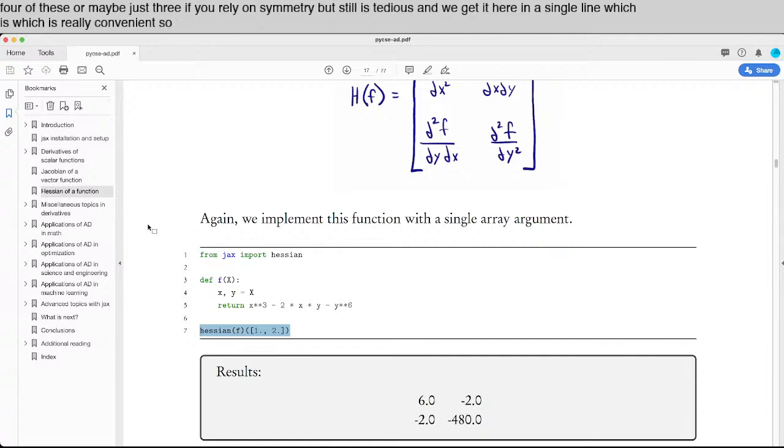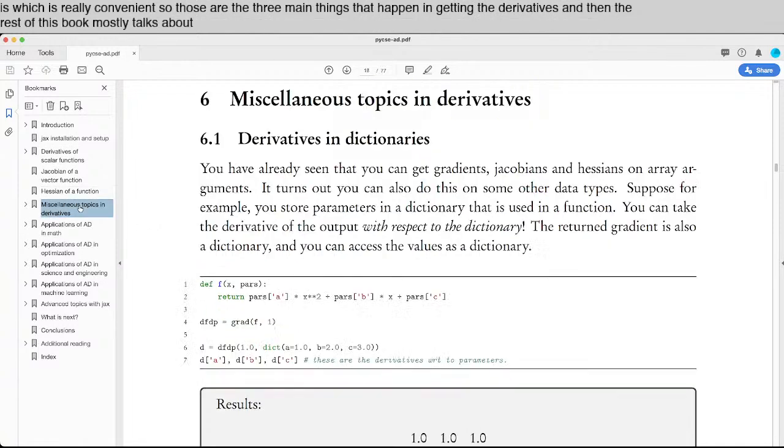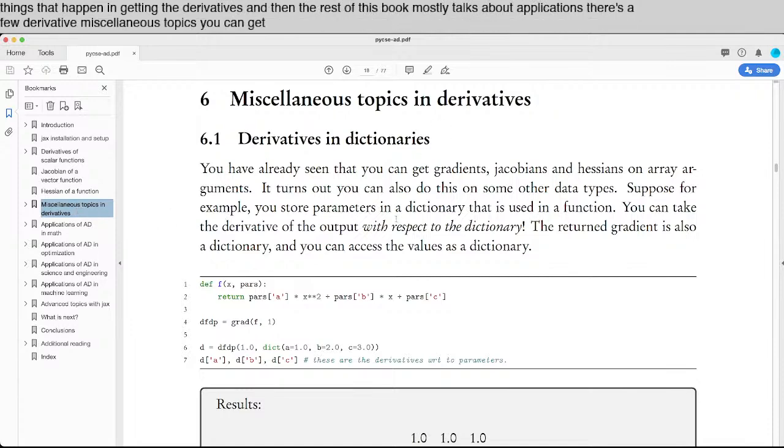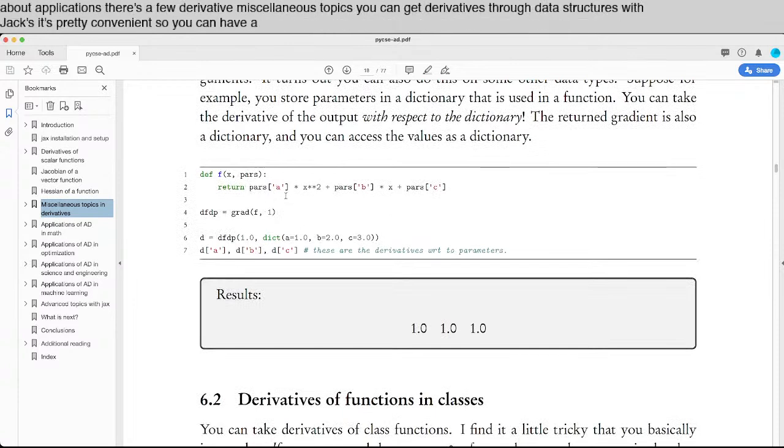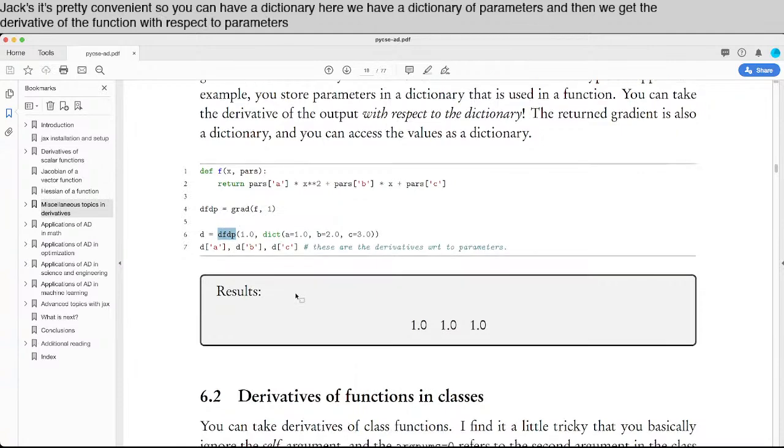So those are the three main things that happen in getting the derivatives. And then the rest of this book mostly talks about applications. There's a few derivative miscellaneous topics. You can get derivatives through data structures with JAX, it's pretty convenient. So you can have a dictionary. Here we have a dictionary of parameters, and then we get the derivative of the function with respect to parameters. And we can use that.